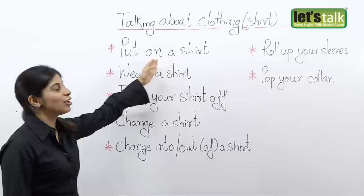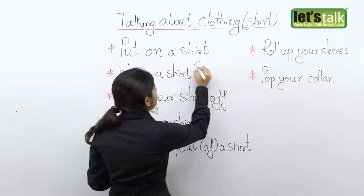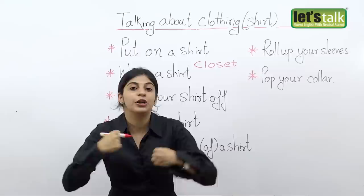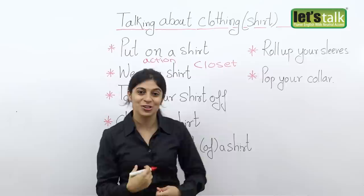The first one is 'put on a shirt.' Put on a shirt is basically when you take out a shirt from your cupboard, from your wardrobe or from your closet, and you put it on. It's the action of wearing a shirt. Please remember, putting on a shirt is the action of wearing a shirt.